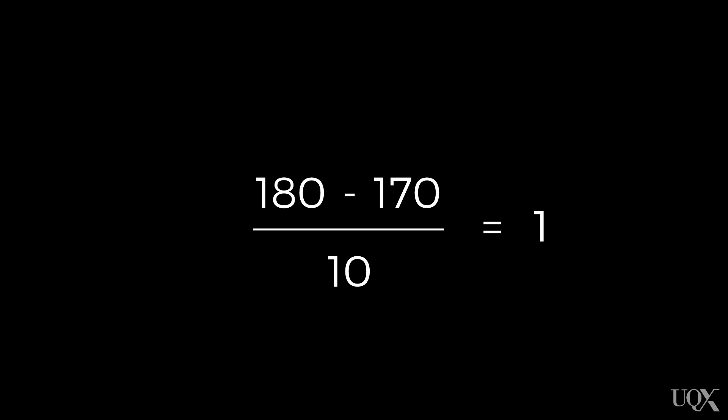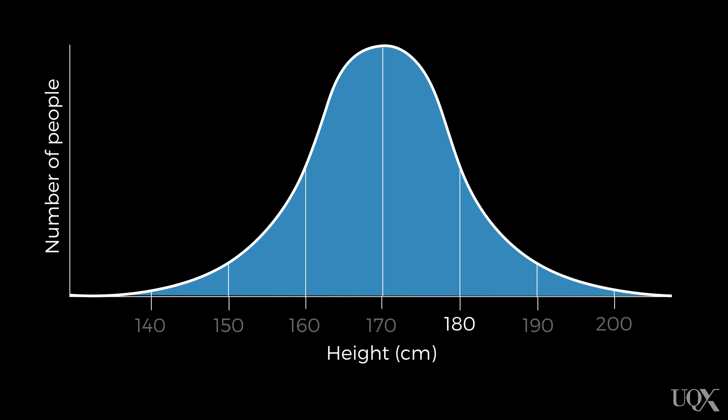For example, someone with a height of 180 centimeters will now have a standardized score of 1 on this standard normal distribution. It's clear to see here that they're 1 standard deviation above the mean.